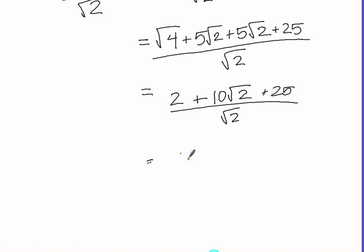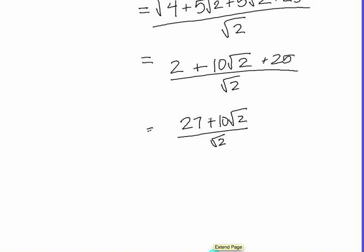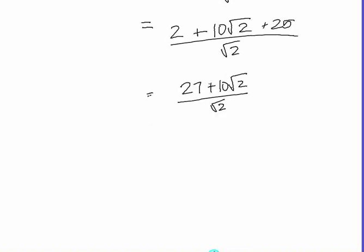Simplifying further: √4 becomes 2; the two sets of 5√2 combine to give 10√2; and we still have the 25. So we have 2 + 10√2 + 25, all divided by √2. Combining like terms 2 and 25 gives us 27, so the expression becomes (27 + 10√2) divided by √2.